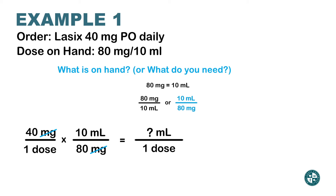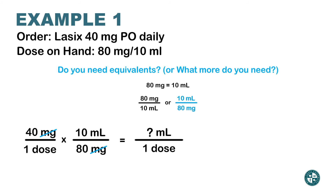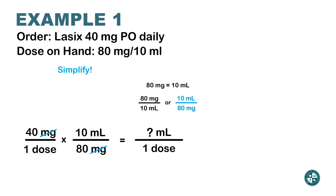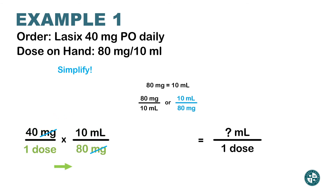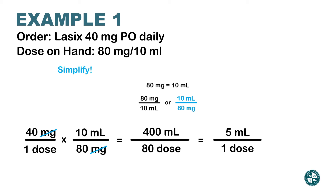Remember, there are four guiding questions in MedMath. The next question is: Do I need any equivalents? No, because we already crossed out milligrams. Milliliters is left on top as desired, and 'dose' is left on the bottom. Now simplify: multiply top by top and bottom by bottom. That gives 400 milliliters on top and 80 dose on the bottom. Dividing 400 by 80 gives 5 milliliters per dose. Simplified, that's just 5 milliliters — and that's how you use dimensional analysis to calculate dosages.